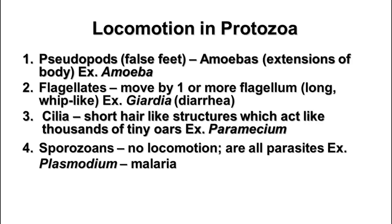Let's look first at the protozoa. There are four main groups based on their type of movement or lack thereof. First, the ones that move by pseudopods—a pseudopod means 'false foot'—and these are the amoebas. A pseudopod is a temporary extension of the cytoplasm that pushes the cell membrane out, moving the cell forward. They use their pseudopods not only for movement but also for eating, surrounding a food particle with two pseudopods that fuse together to form a food vacuole.